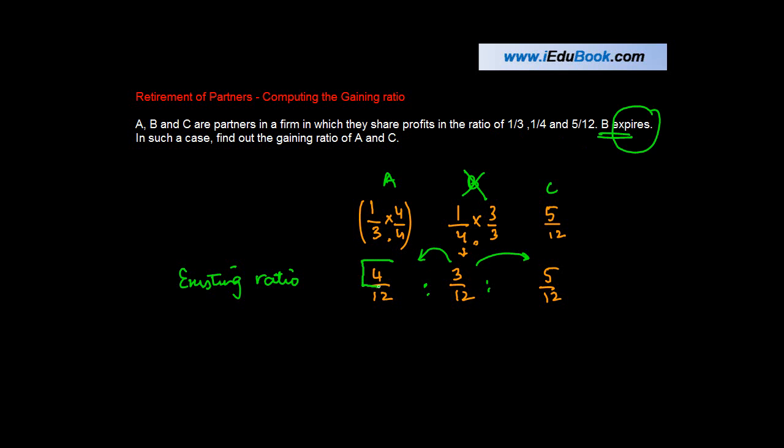So basically A will get 4/12 of 3/12. Actually this is wrong. Can anyone guess what it will be? I told you it is shared in the ratio of their numerators.